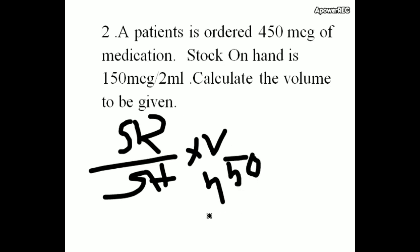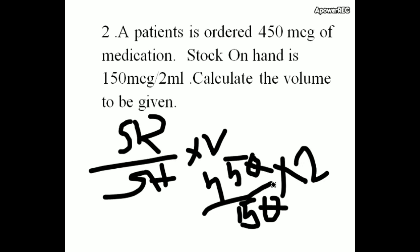450 by 150. That is stock in hand into volume. Volume is equal to 2 ml. This zero gone. 45 divided by 15. 3.